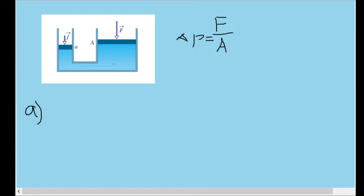Part A of the problem asks us to find out what large F, or the force acting down on the large piston, needs to be in order for it to prevent the liquid from moving the piston.